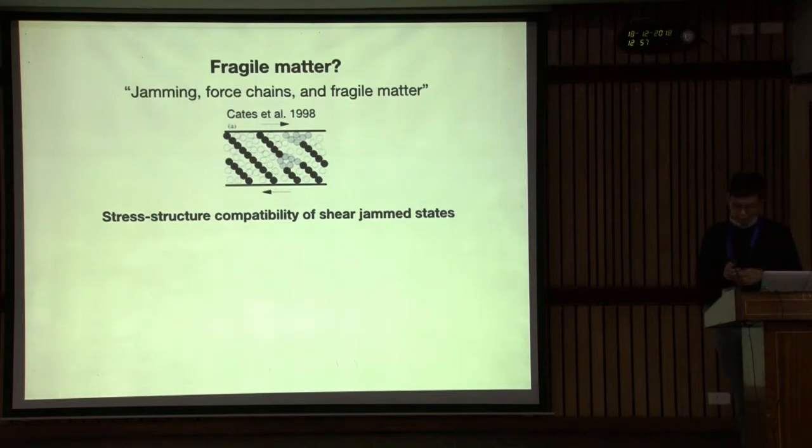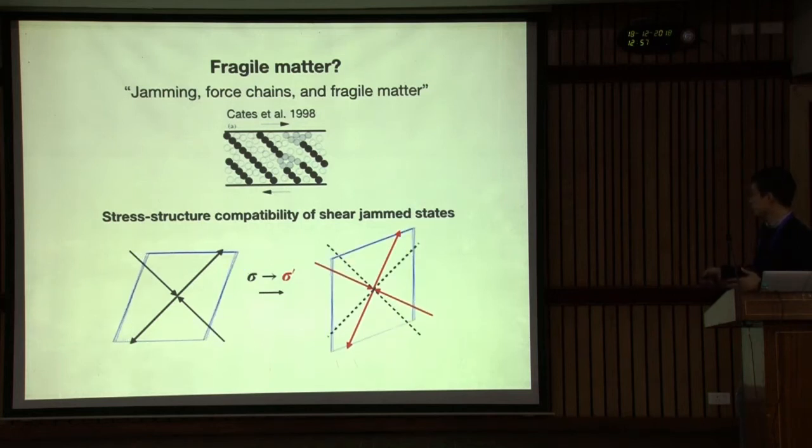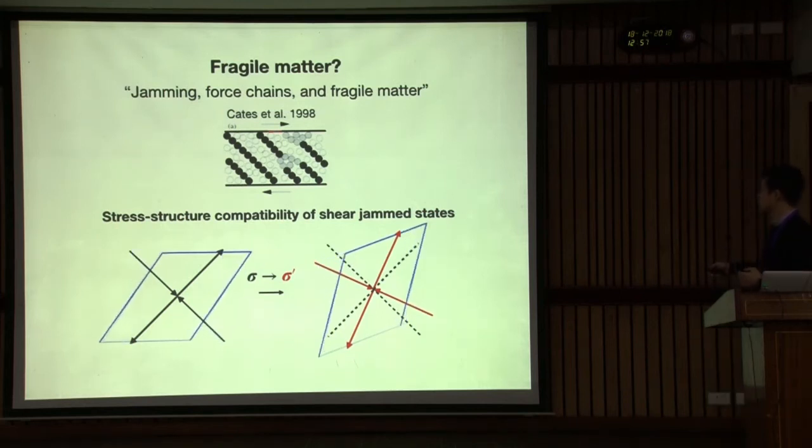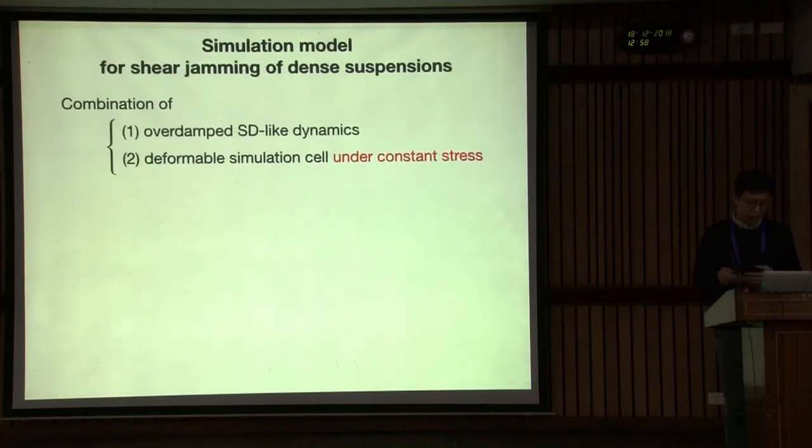So shear jamming is today's focus, my focus. When I go back to the literature, Mike Cates introduced some concept for constitutive modeling. He introduced the concept of fragile matter. The idea of fragile matter is like this: the main part is this stress-structure compatibility. What I mean is if material flows this way and gets jammed, but if you change the stress compression work, it may flow again. This is one component of the aspect of this non-Newtonian fluid near solid.